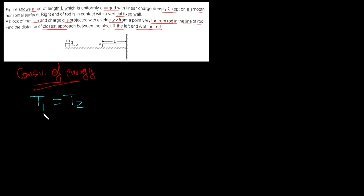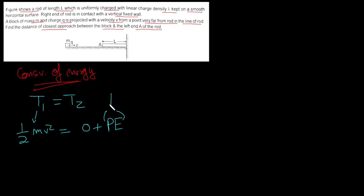In this problem, what happens is that the total energy at point one should be equal to the total energy at point two. At the point of closest approach, the kinetic energy should be zero, and there will only be potential energy. If I find that potential energy, the problem is solved. So I want to find this potential energy, which equals charge Q times the potential V.